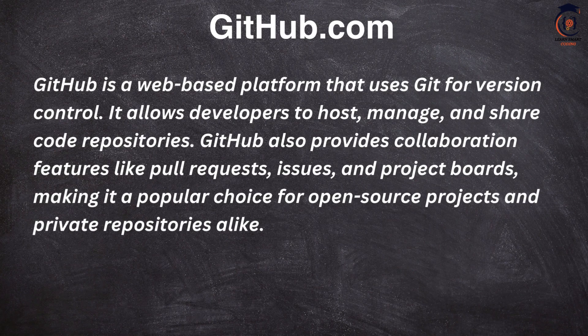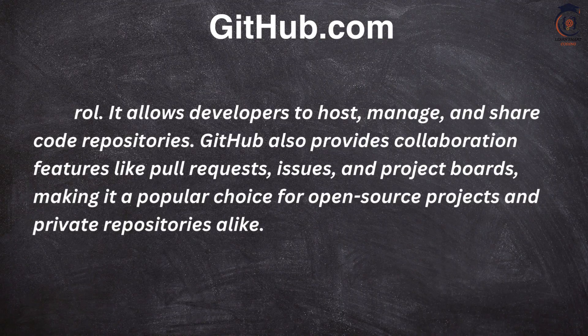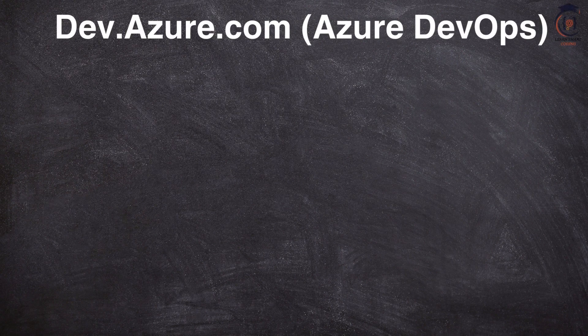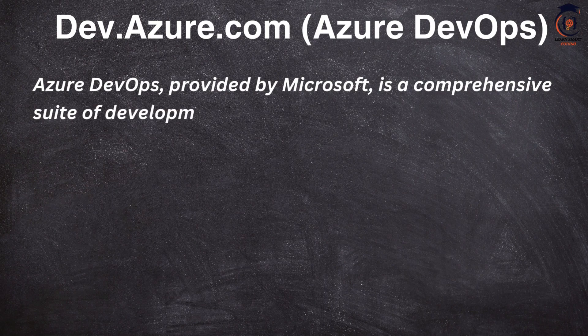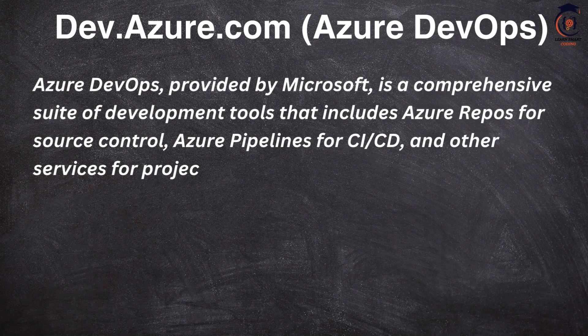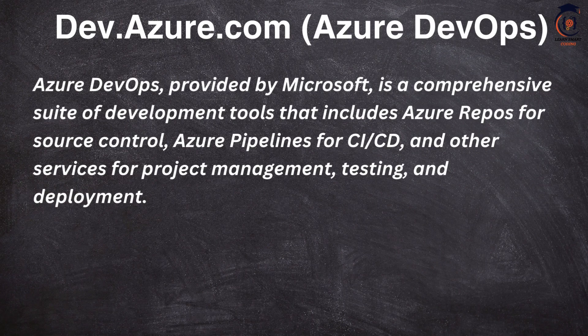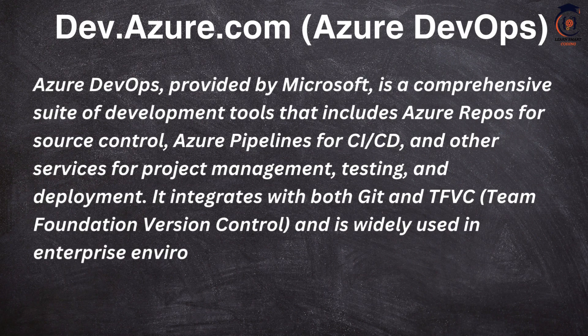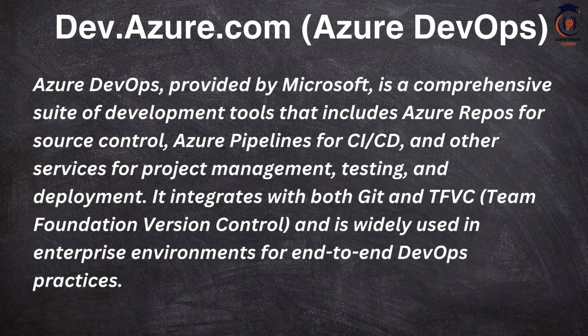Source control and version control have a lot of history — tools like SVN, TFS, and Microsoft tools. These are now being replaced by the latest source control platforms such as GitHub and Azure DevOps.